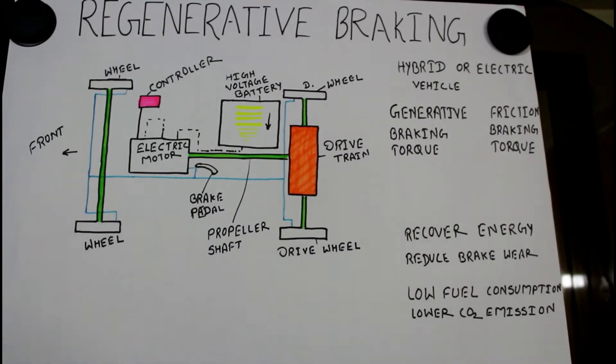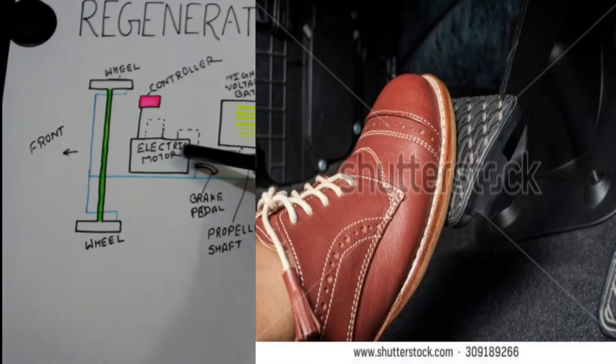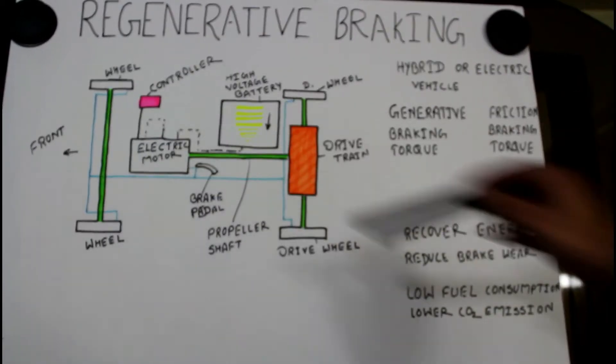Let's have a look at the working of regenerative braking system. When our vehicle is in moving condition and deceleration is required, at that time we press the brake pedal. When we press this brake pedal, the electric motor is converted into a generator.